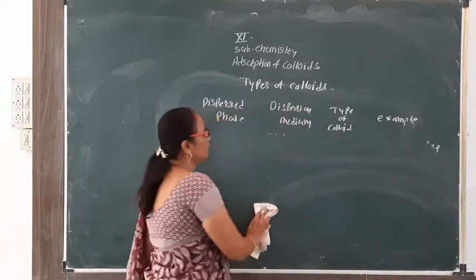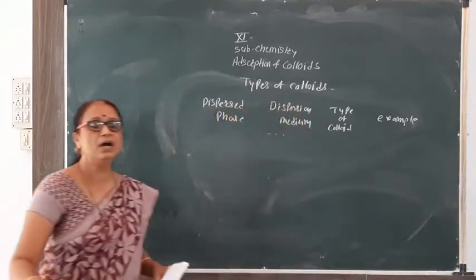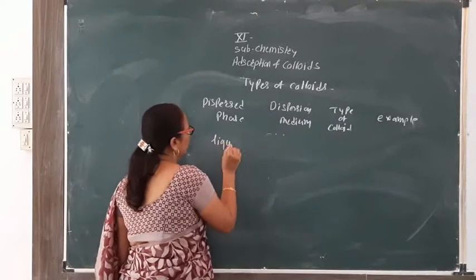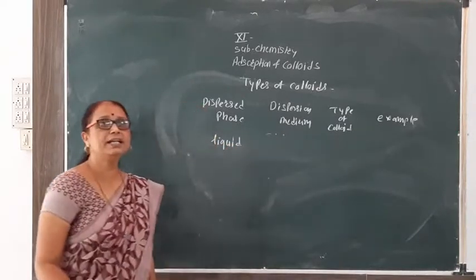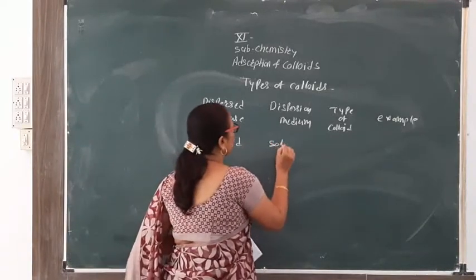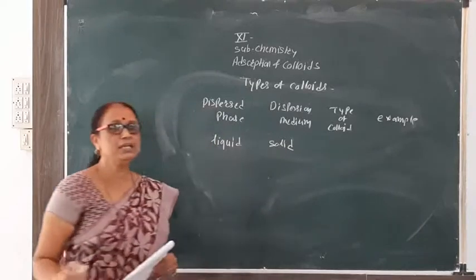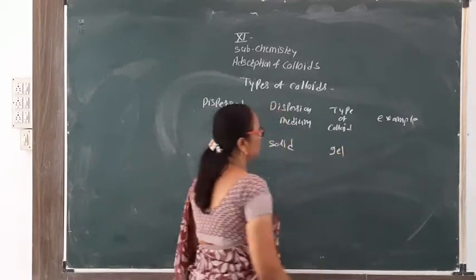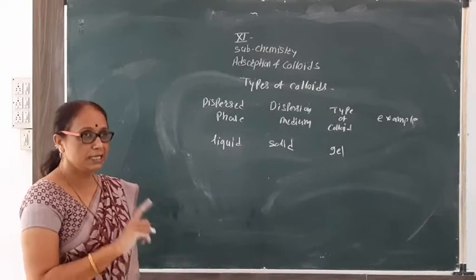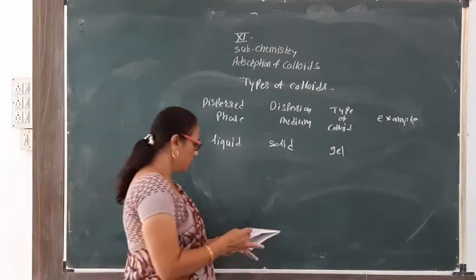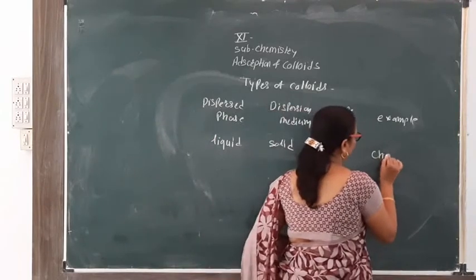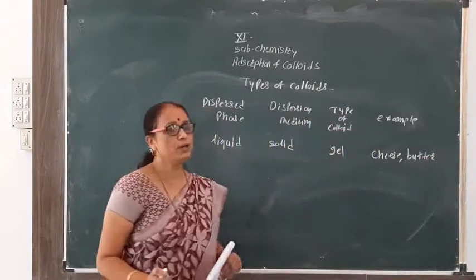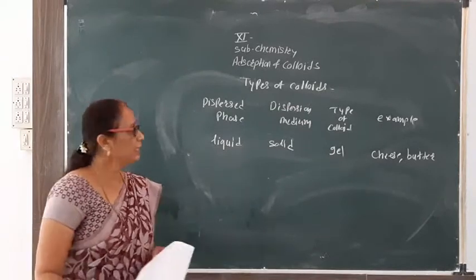Now let us change the dispersed phase. When the dispersed phase is liquid and the dispersion medium is solid, this is a liquid-in-solid type of colloidal solution, which is called a gel. Examples include cheese and butter.